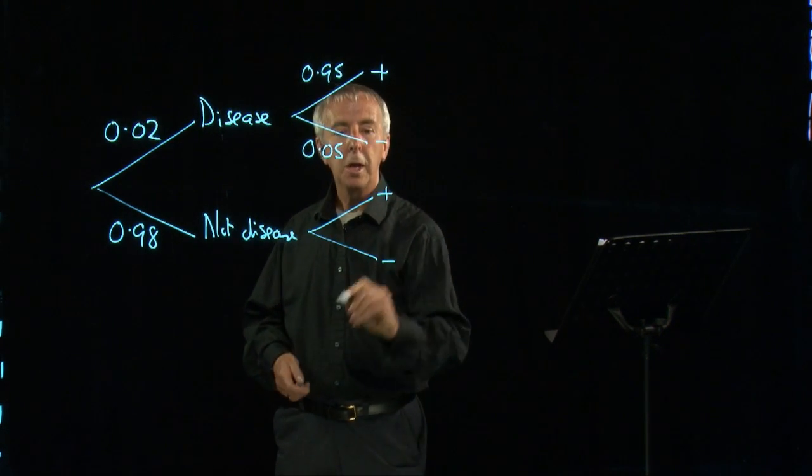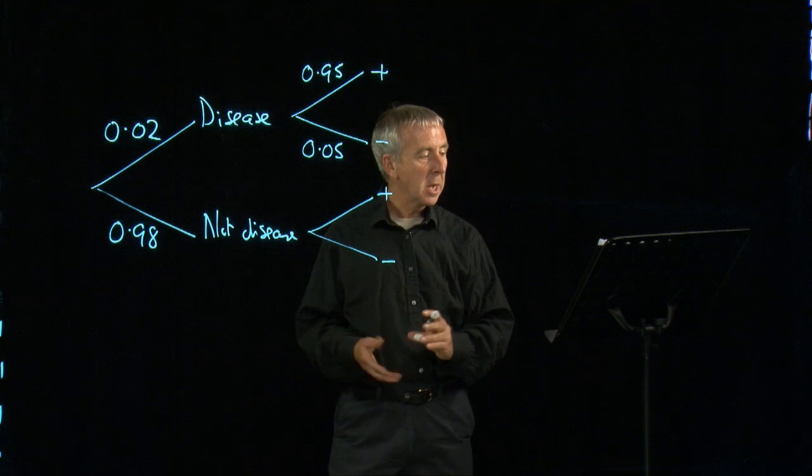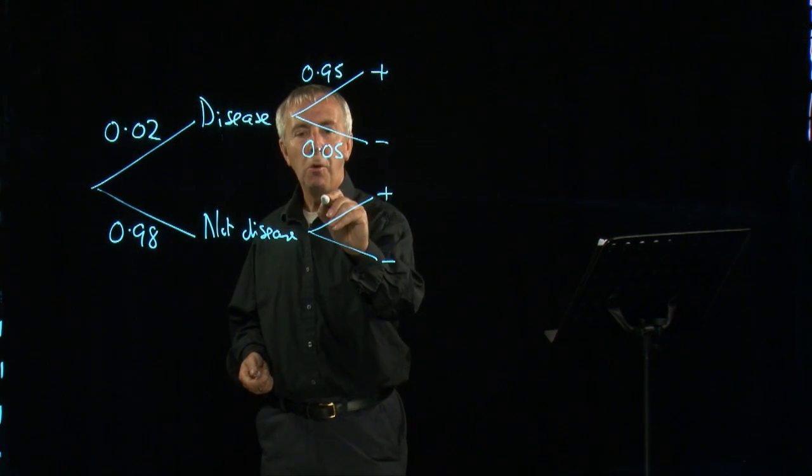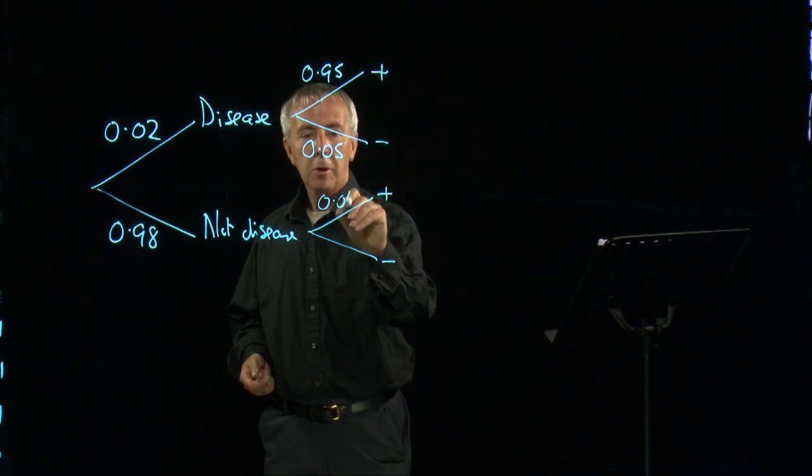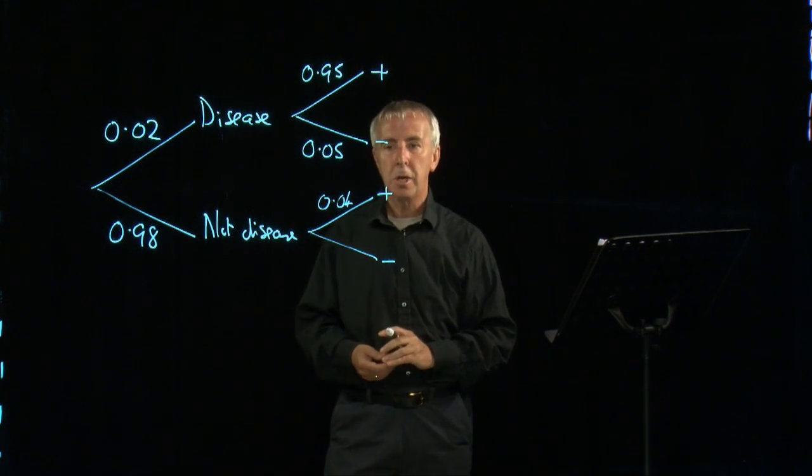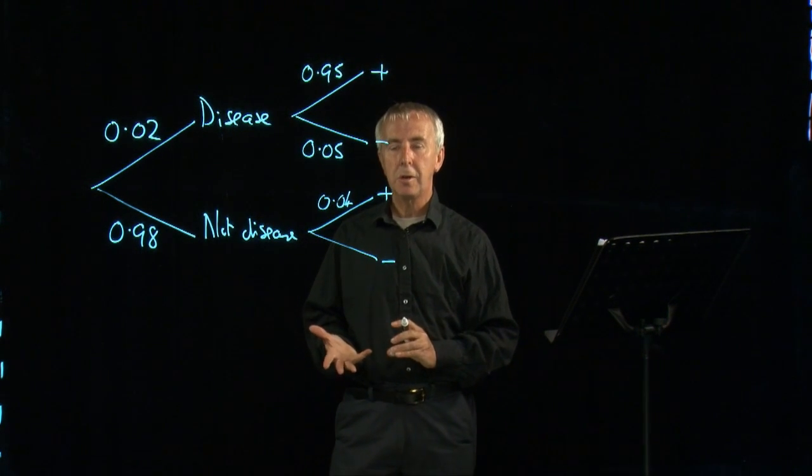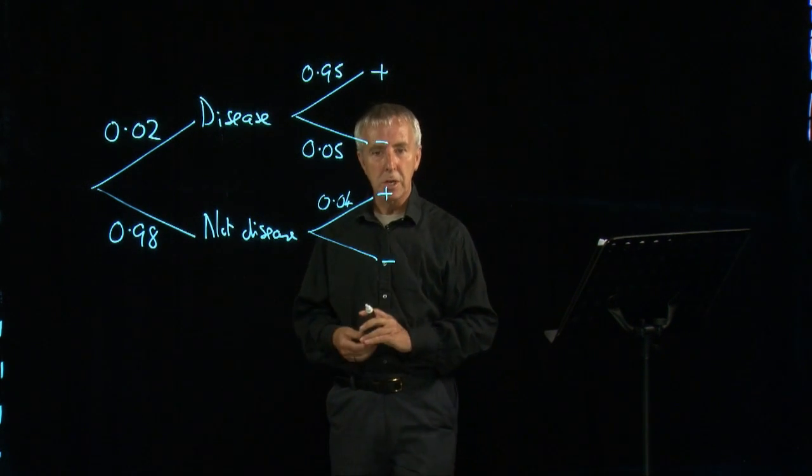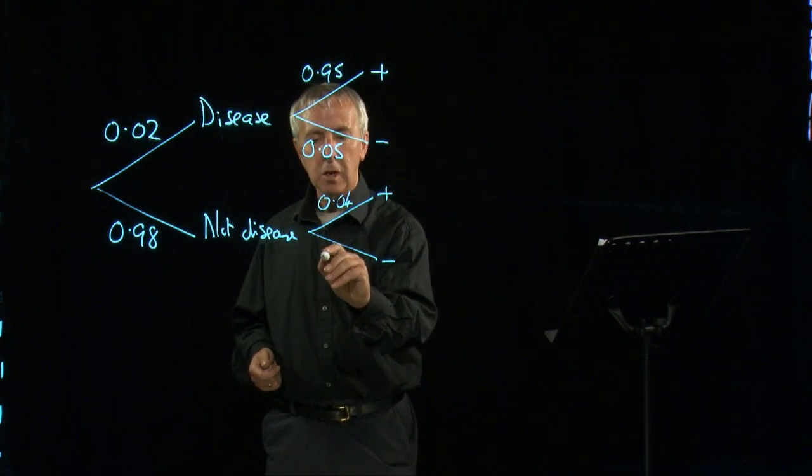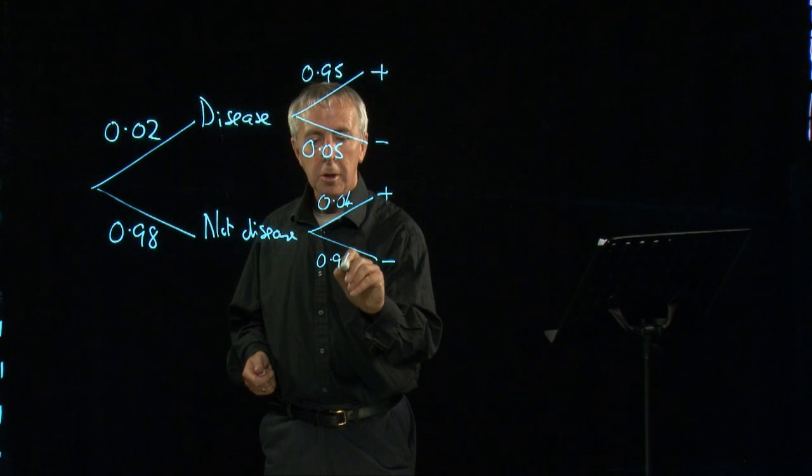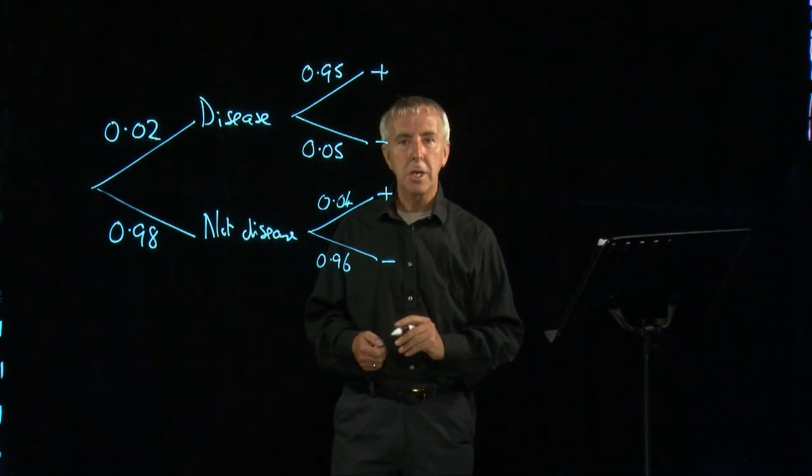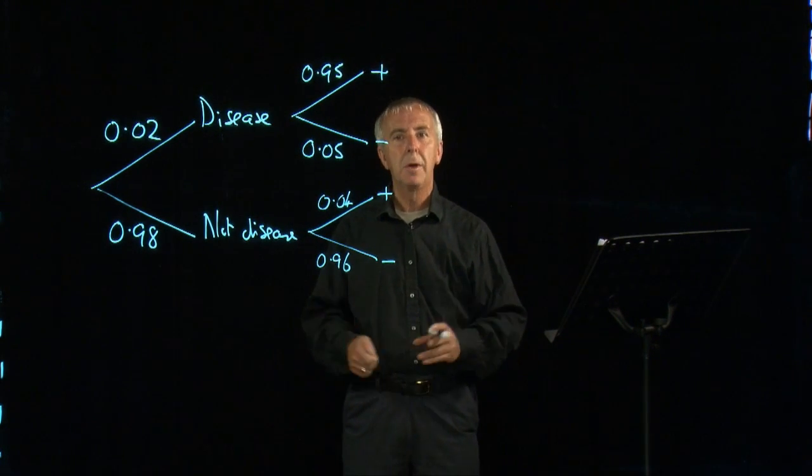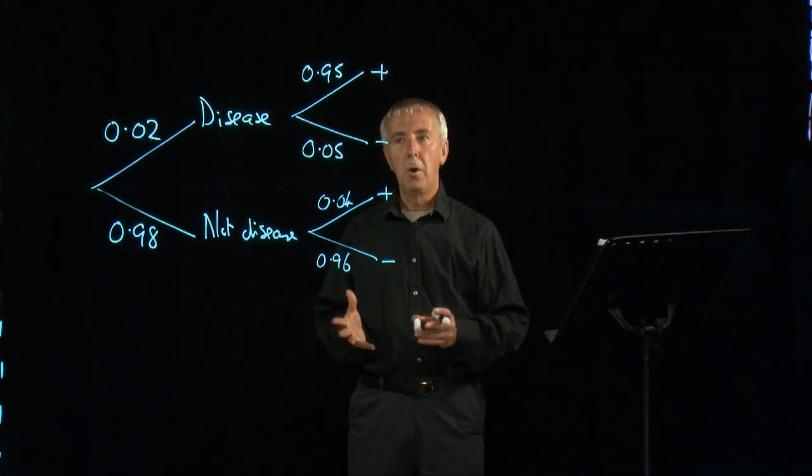And you still get some positives from the test. Also, of course, negatives. Let's say we're going to get a 4% rate of the test saying you're positive when you don't actually have the disease. These are called false positives for obvious reasons. And so if you don't have the disease, the test comes out negative as it should.